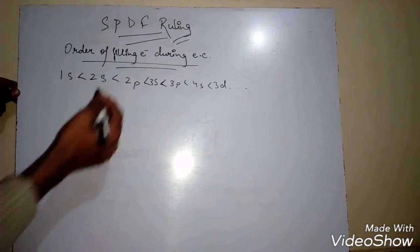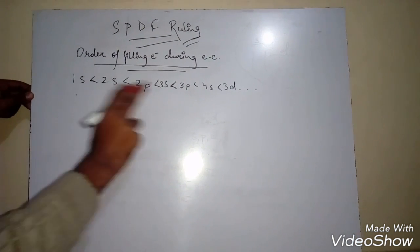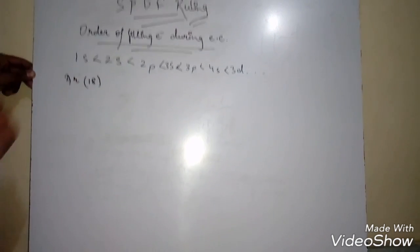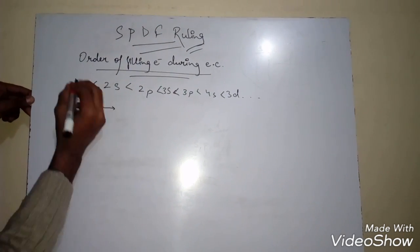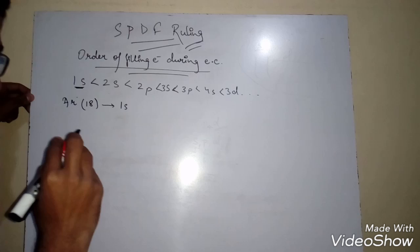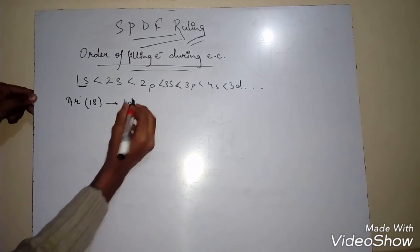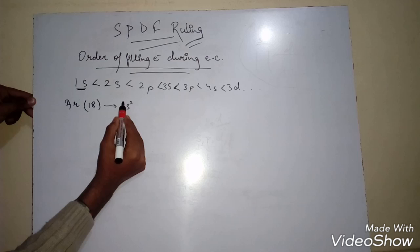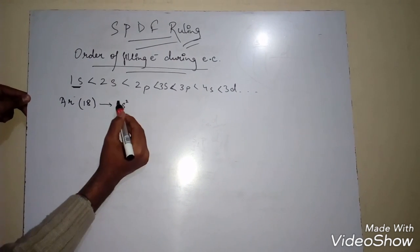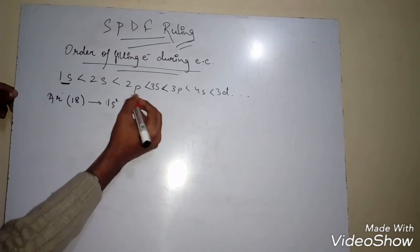Let me explain the notation. We write the principal quantum number, then the subshell name, then the number of electrons as a superscript. For example, 1S² means principal quantum number 1, subshell S, and two electrons. I won't go into too much detail about the principal quantum number, but it doesn't affect the process of doing electronic configuration much.